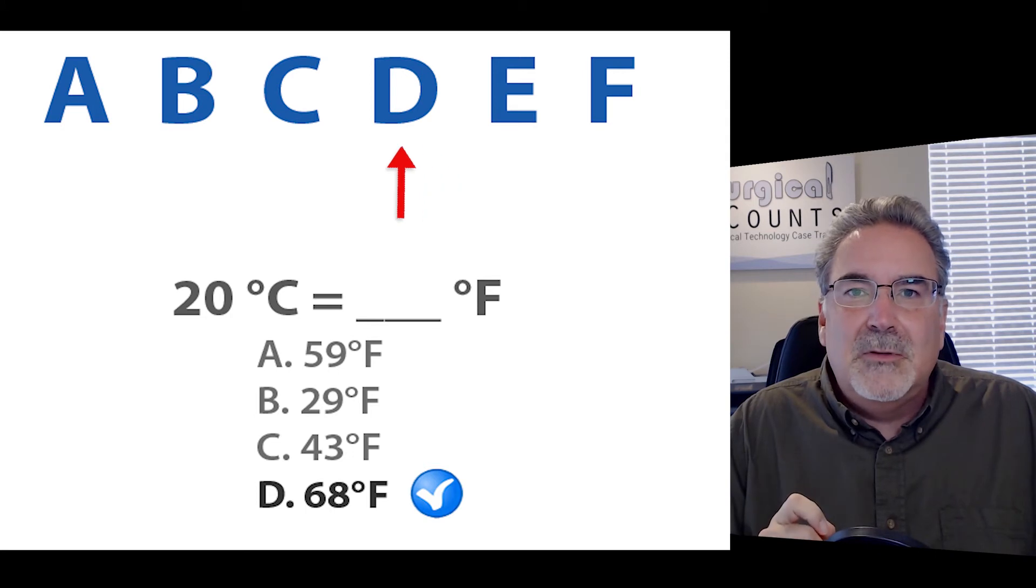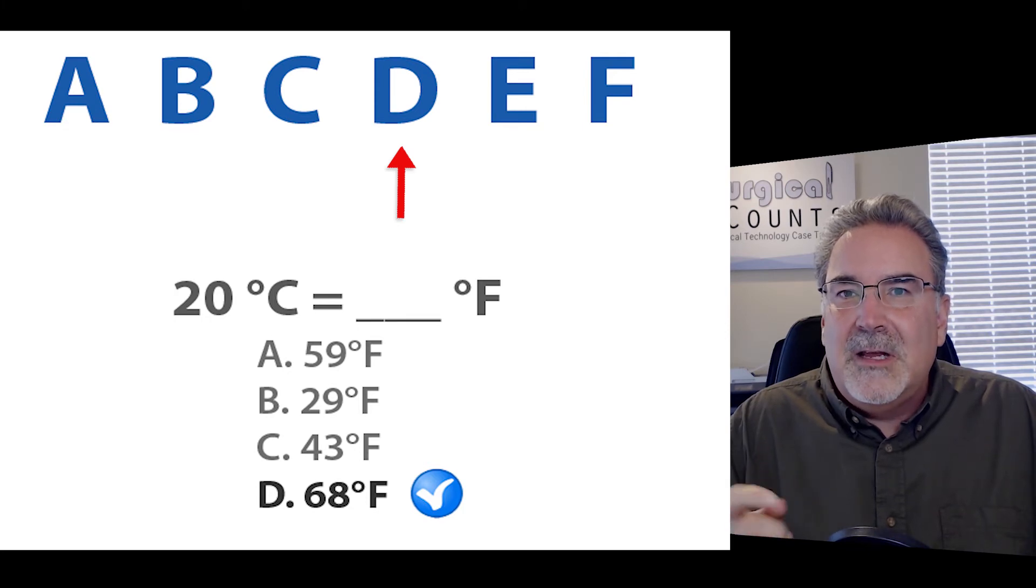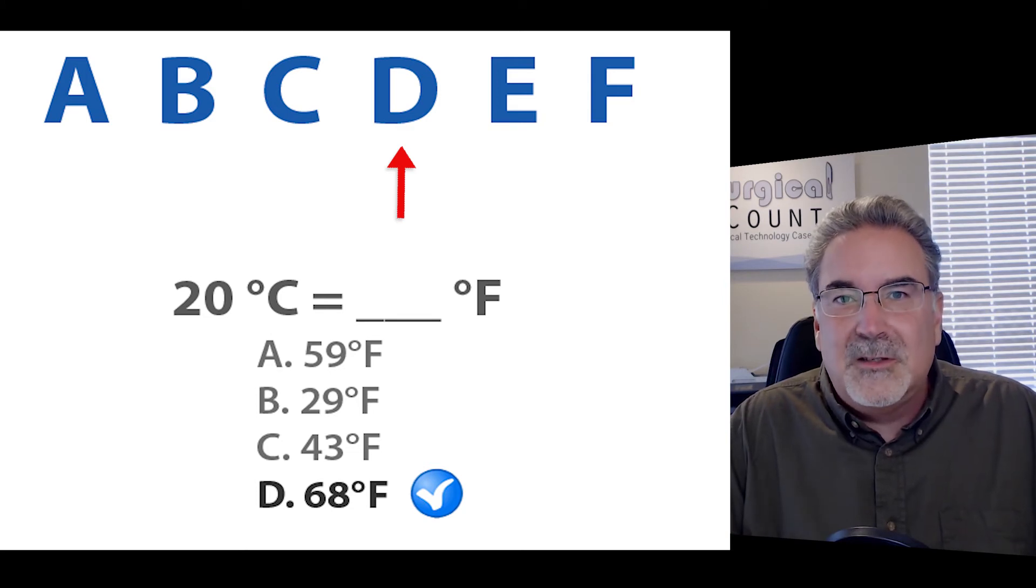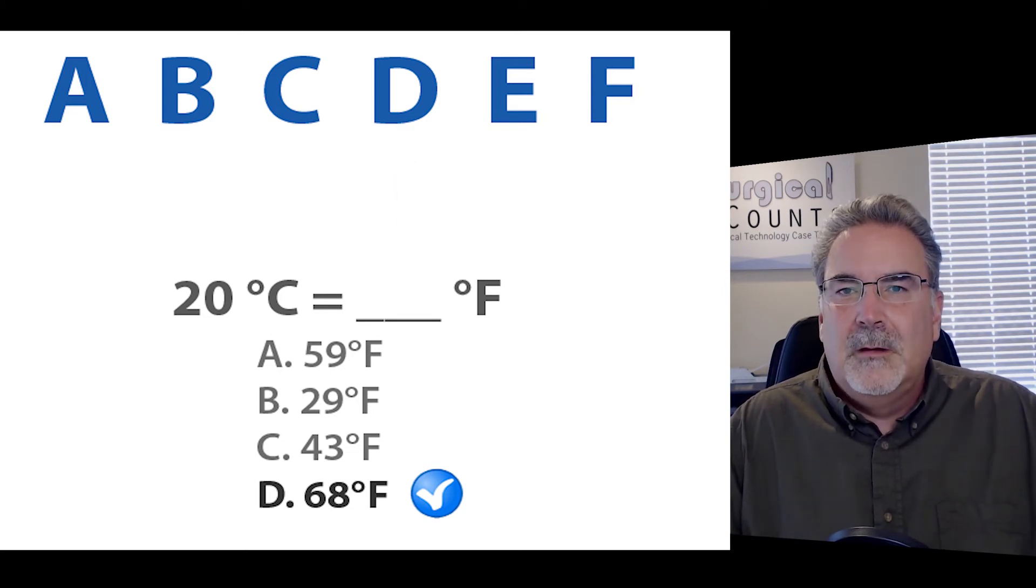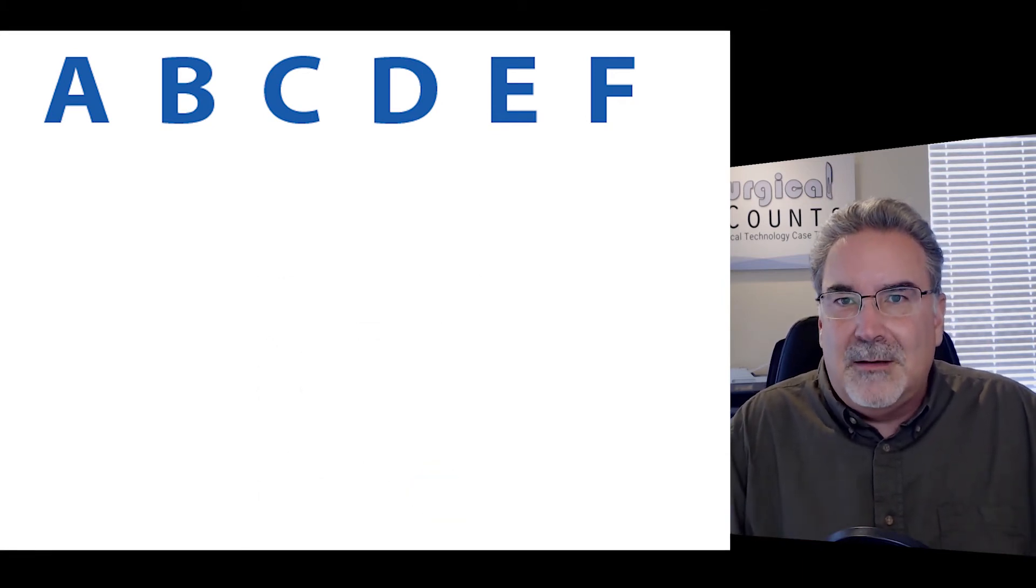Now, the next letter we come to is a D. Is that going to double or divide? Well, we're going to divide. 38 divided by 2 is 19. And that's really close to 20, which is the correct answer. So that's cool. It seems to work going both ways, both up and down the letter scale.